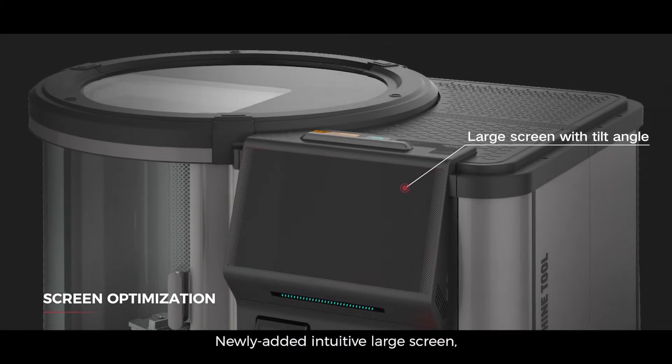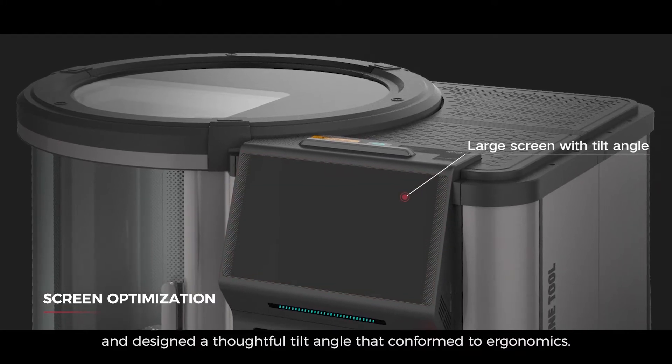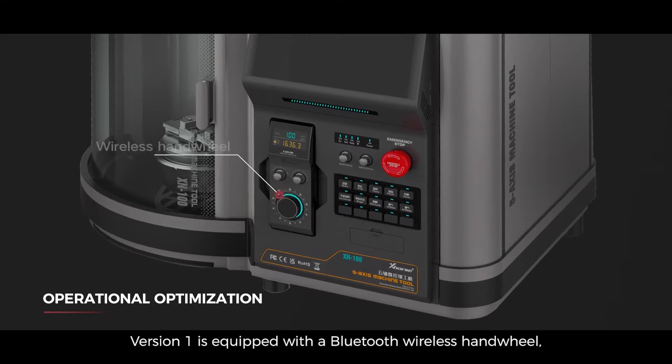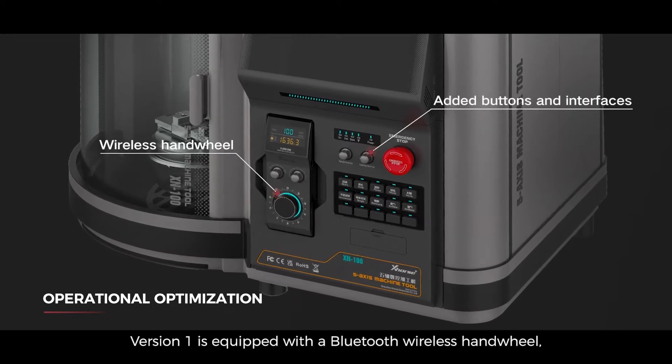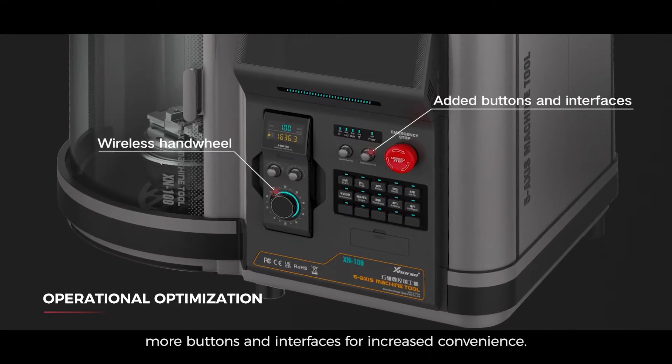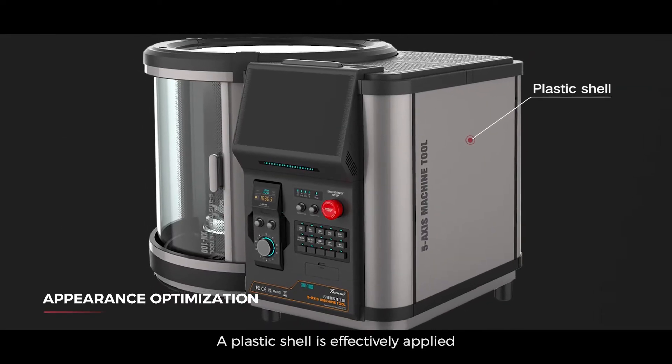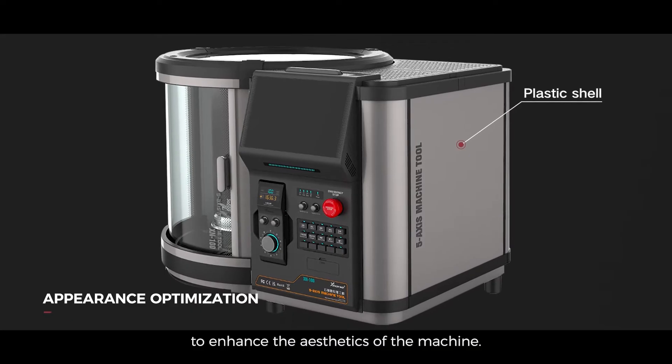Newly added intuitive large screen and designed a thoughtful tilt angle that conformed to ergonomics. Version 1 is equipped with Bluetooth wireless handwheel, more buttons and interfaces for increased convenience. The plastic shell is effectively applied to enhance the aesthetics of the machine.